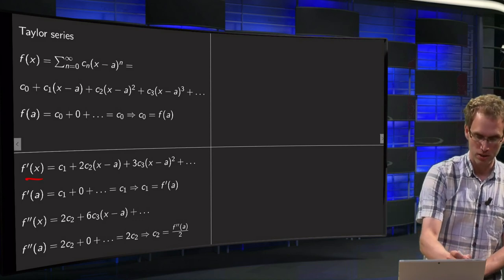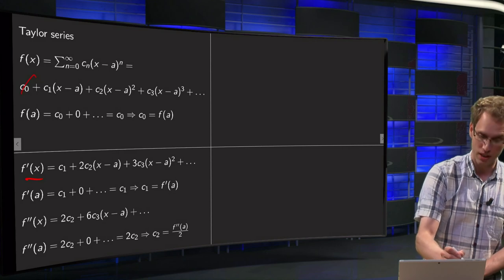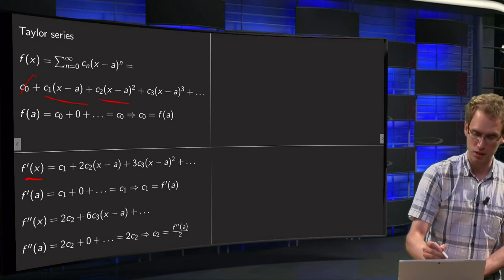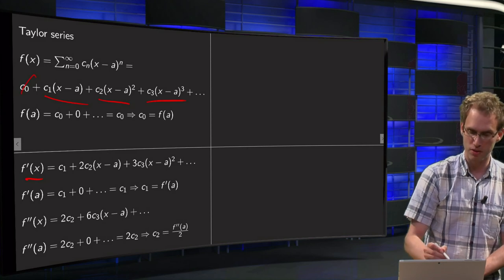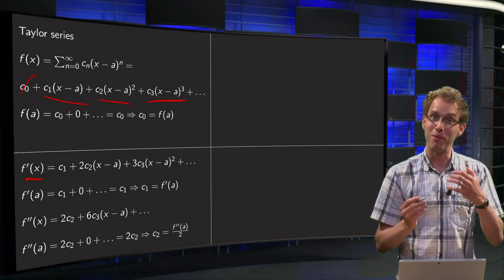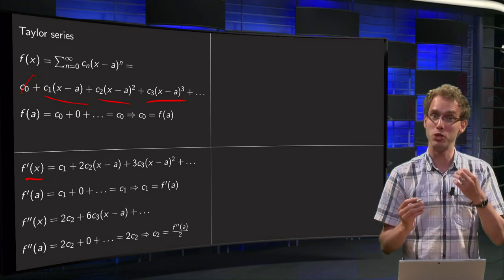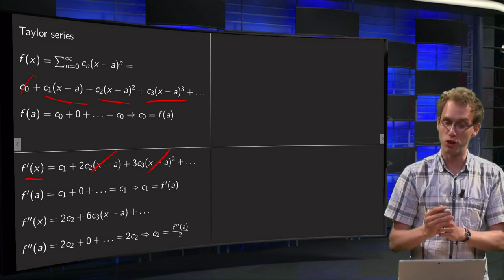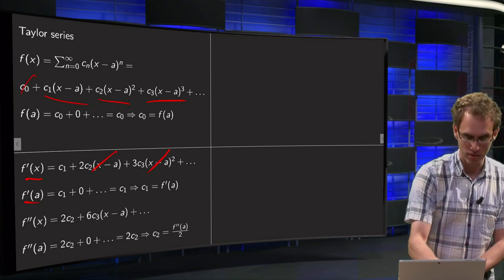So we compute f prime. This term cancels out, from this one we get c1, from this one we get 2 times c2 times (x-a), from this one 3 times c3 times (x-a) squared. And now we do the same trick, again we substitute x equals a, because then all those terms here drop out and we get f prime of a equals c1.